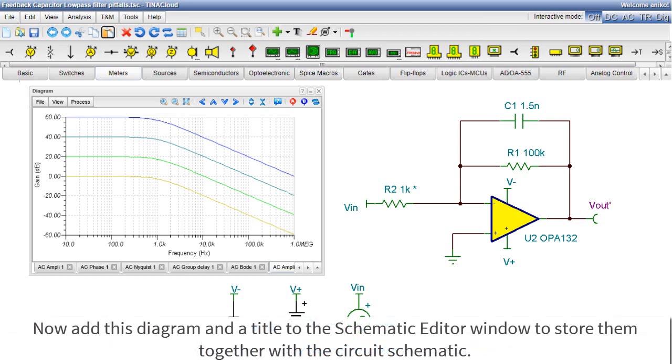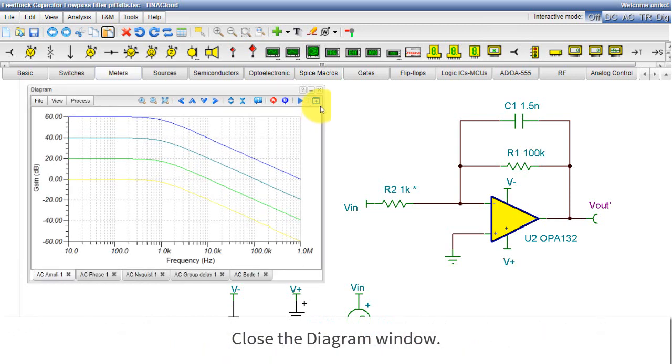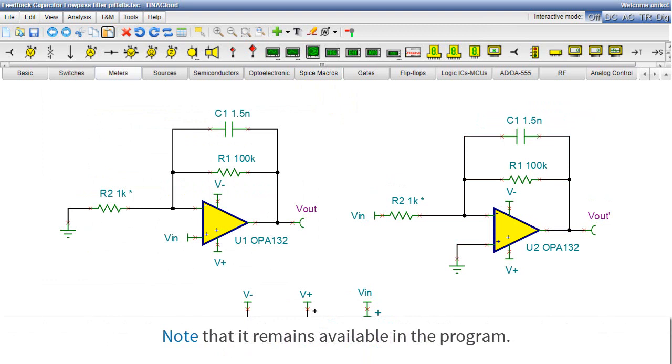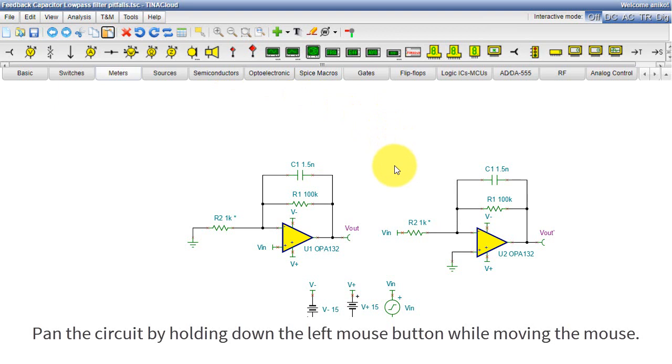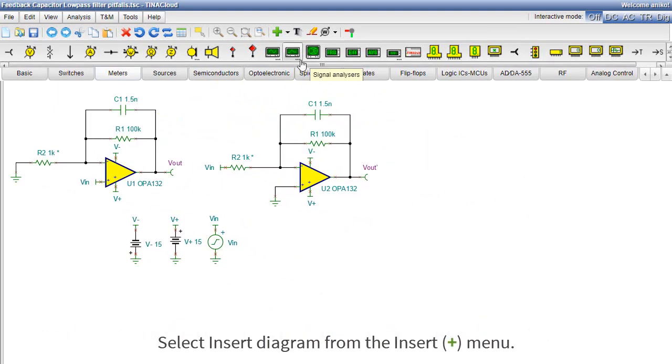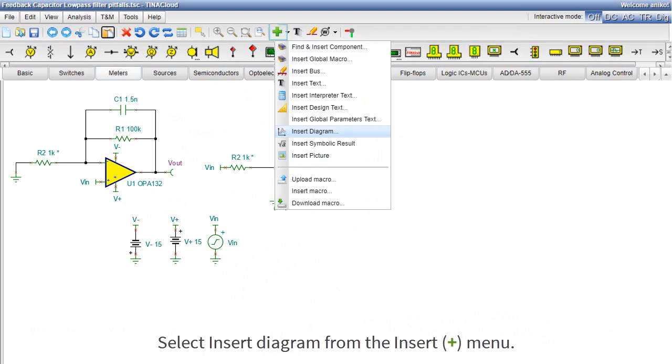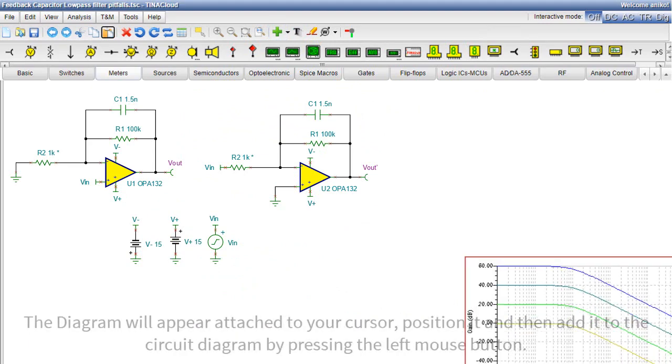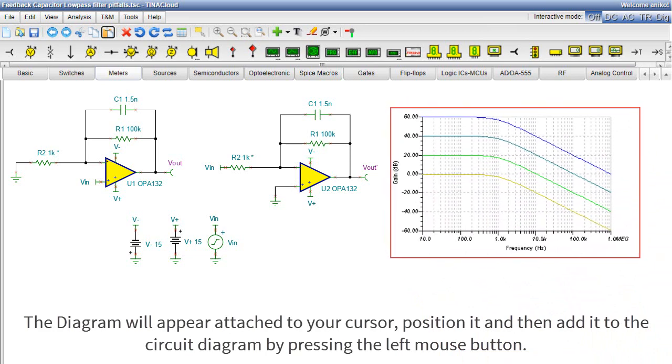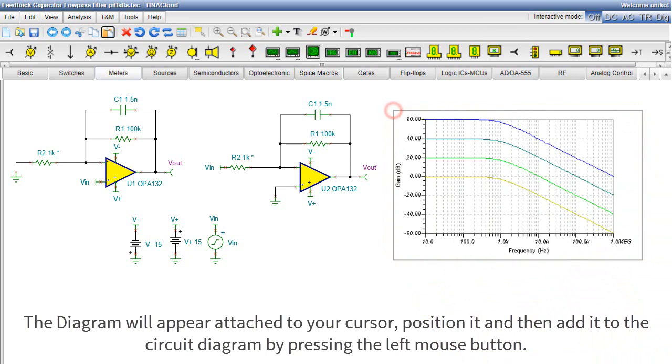Now add this diagram and a title to the schematic editor window to store them together with the circuit schematic. Close the diagram window. Note that it remains available in the program. Use the zoom out command to make more place. Pan the circuit by holding down the left mouse button while moving the mouse. Select Insert Diagram from the Insert Plus menu. Select AC Amplit 1 from the list. You can edit the diagram size, then press Insert. The diagram will appear attached to your cursor. Position it and then add it to the circuit diagram by pressing the left mouse button.